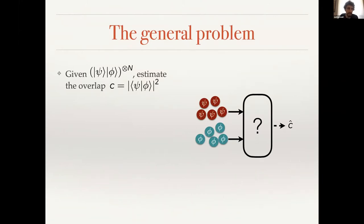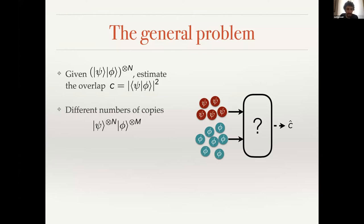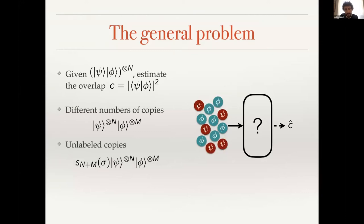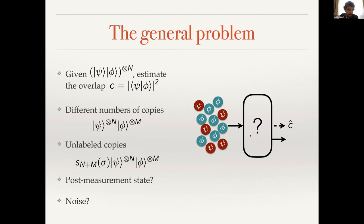The problem we consider is: given a certain number of copies of pure states psi and phi, estimate their overlap. Without loss of generality, we can have different numbers of copies of each — that's not a problem in our approach. We also consider that they might be unlabeled, subject to a random permutation, so we don't know if a given state is psi or phi. Additionally, we consider what happens to the states after performing the measurement — so it's non-destructive in some sense.